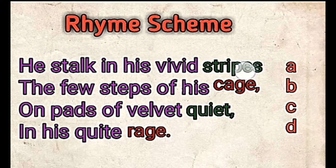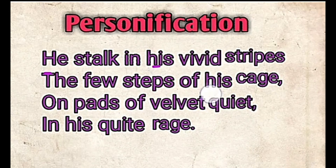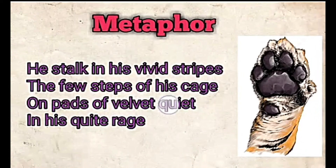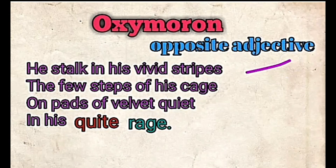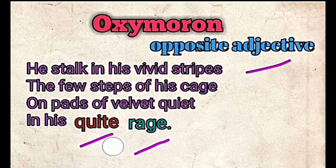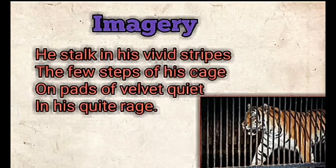Now let us see the rhyming scheme: stripes (A), cage (B), quiet (C), rage (D) — so it is ABCD. For personification: 'he' and 'his' are used for the tiger, treating the tiger as a human. For metaphor: velvet is used as a metaphor for the paws — the pads are compared to velvet because they are very soft. There is also an oxymoron in the last line: 'quiet rage' — both are opposite adjectives used together. For imagery, the poet creates a vivid image of the tiger walking in vivid stripes that we can clearly visualize.